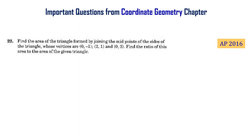Find the area of the triangle formed by joining the midpoints of the sides of the triangle whose vertices are (0, -1), (2, 1), and (0, 3). Find the ratio of this area to the area of the given triangle.